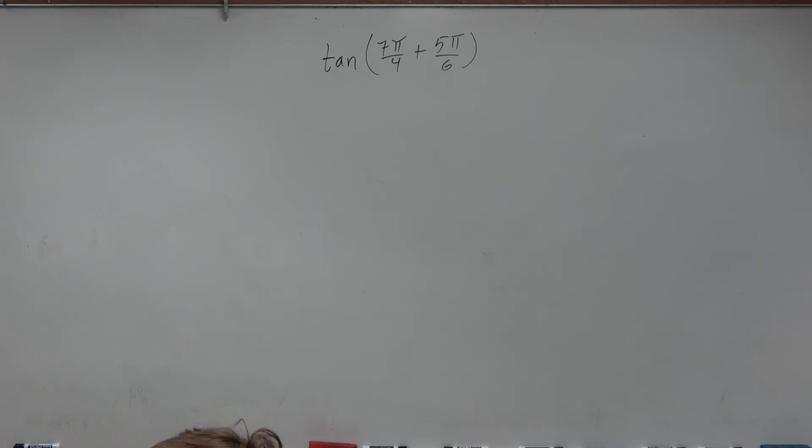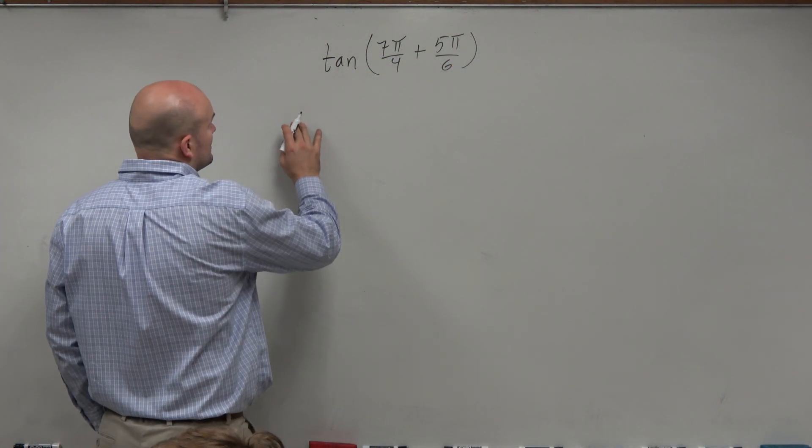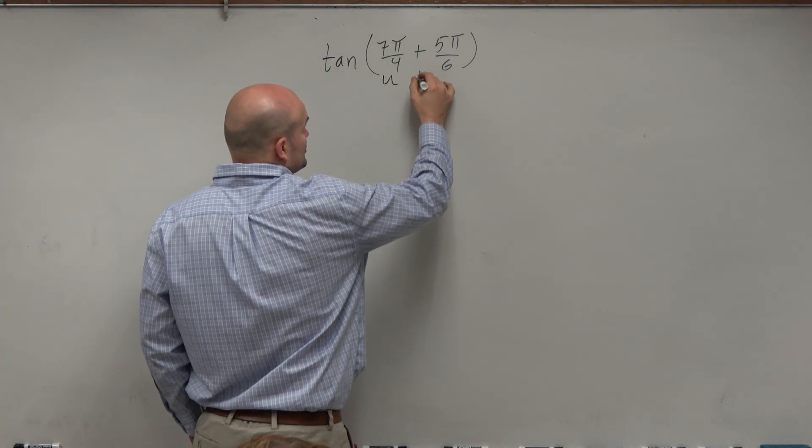So in this case, I have tangent of 7π over 4 plus 5π over 6. I won't expect you guys to write this first term down, but you can see this is two angles, u plus v.